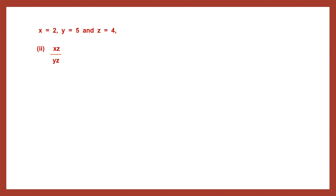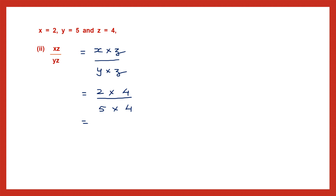Second part of question 9: we have xz divided by yz. Let's substitute the values — x is 2, z is 4, y is 5, and z is 4. We can cancel the 4s. Now we just have 2 by 5. So the answer here is 2 by 5.